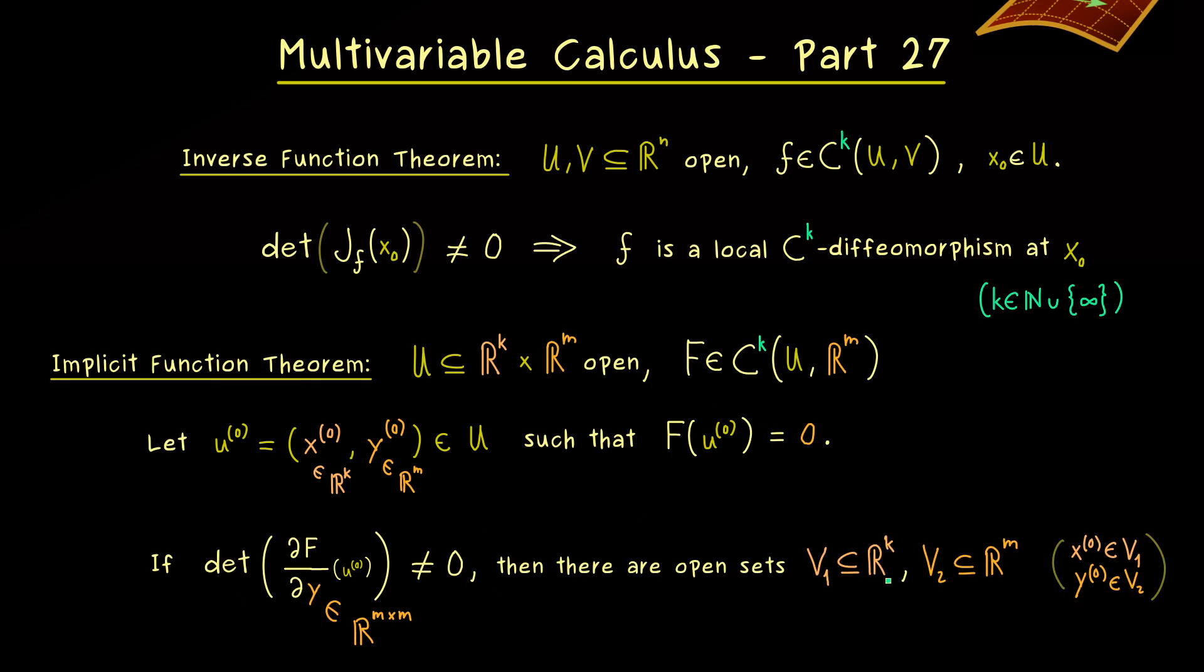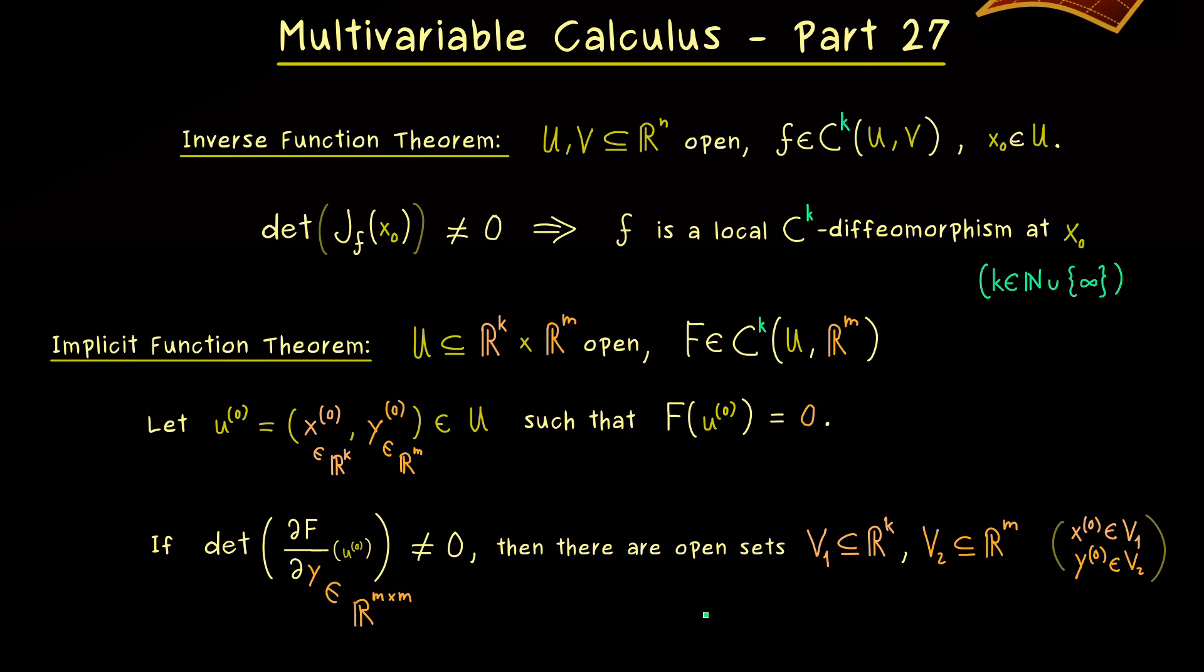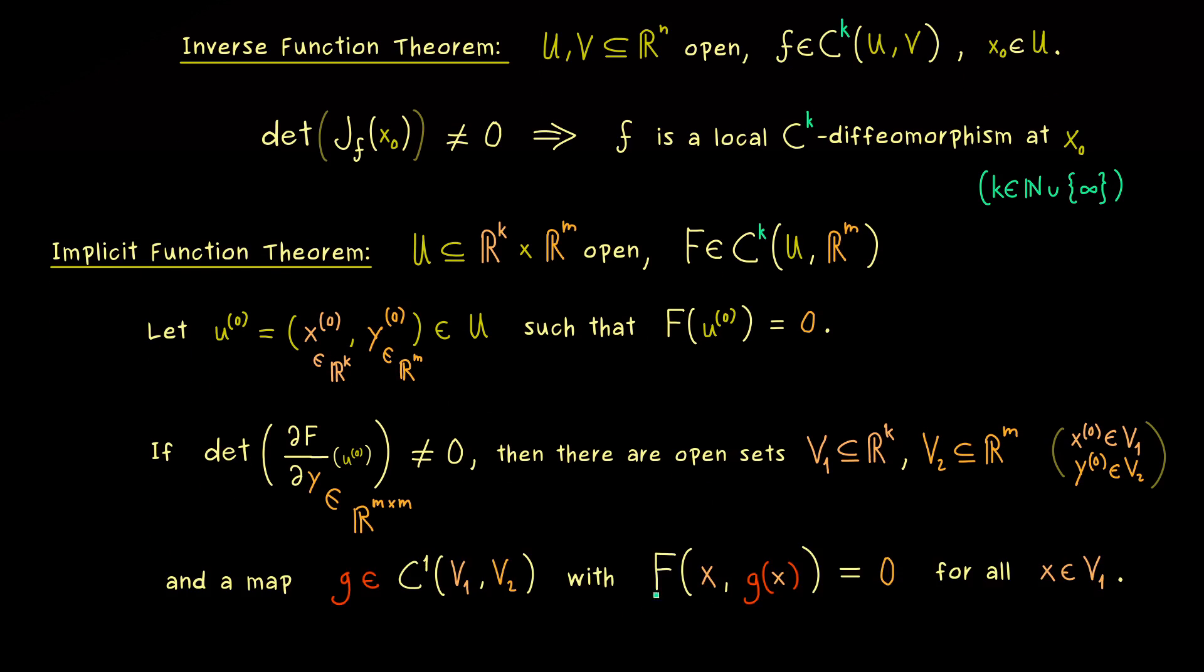And then we get the existence result for open sets and a function g. This g is the wanted implicit function satisfying our equation for capital F. And now the order for the differentiability also translates to this function g.